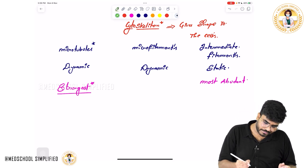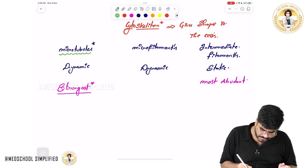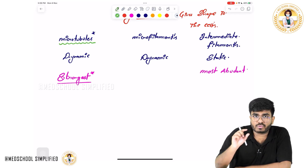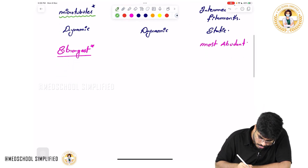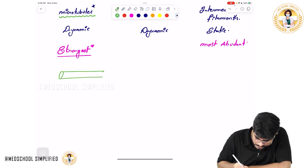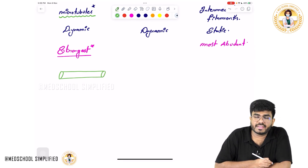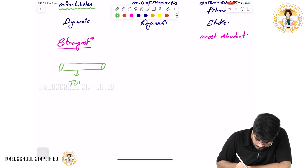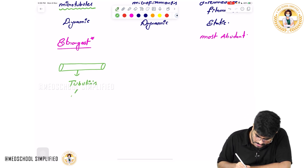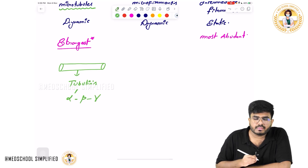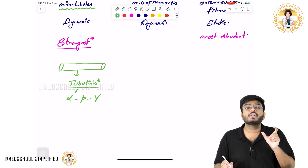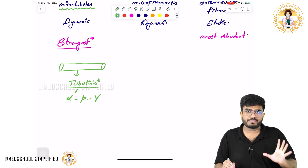Now let's discuss important points about microtubules. Microtubules are made up of tubulin. There are different types of tubulins — alpha tubulin, beta tubulin, and gamma tubulin. Simply put, microtubules are made up of a protein called tubulin.